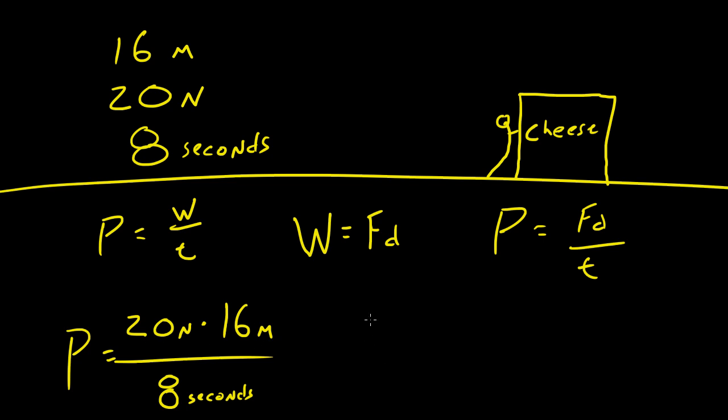So now if we go ahead and run some calculations, 20 times 16, and I'm going to go ahead and throw out my units right now. Power equals 20 times 16, which is, if I'm correct, 320, over 8 seconds. I'll just go ahead and write 8 right now. So, since we used the correct units of Newton, meters, and seconds, we're going to end up with a unit of power, which is watts, and 320 divided by 8 gives you a final power of 40 watts.